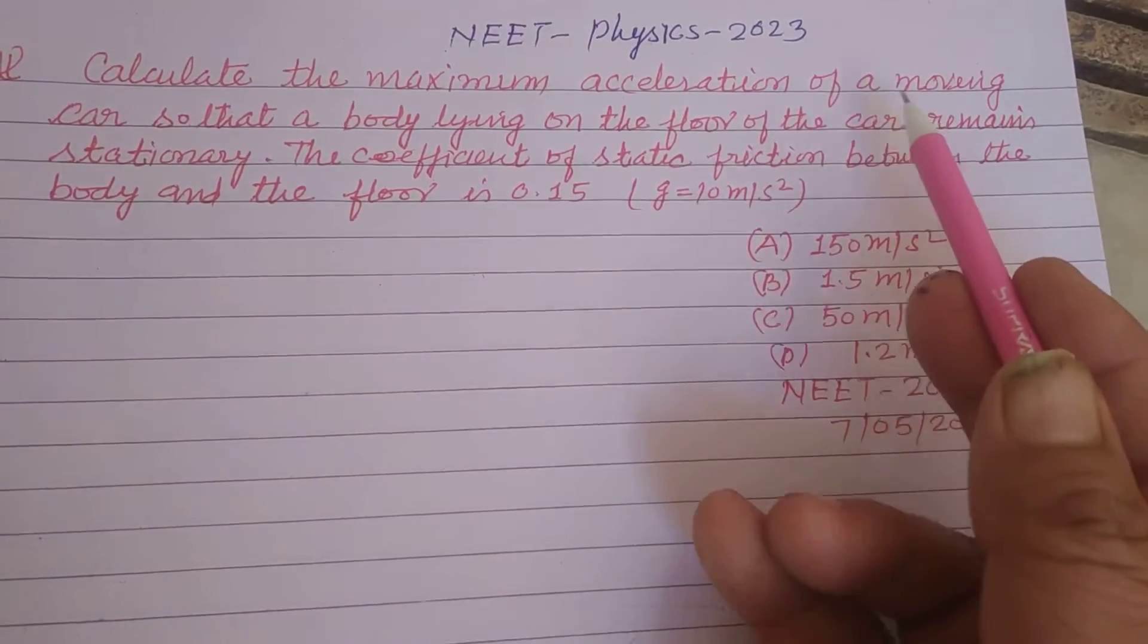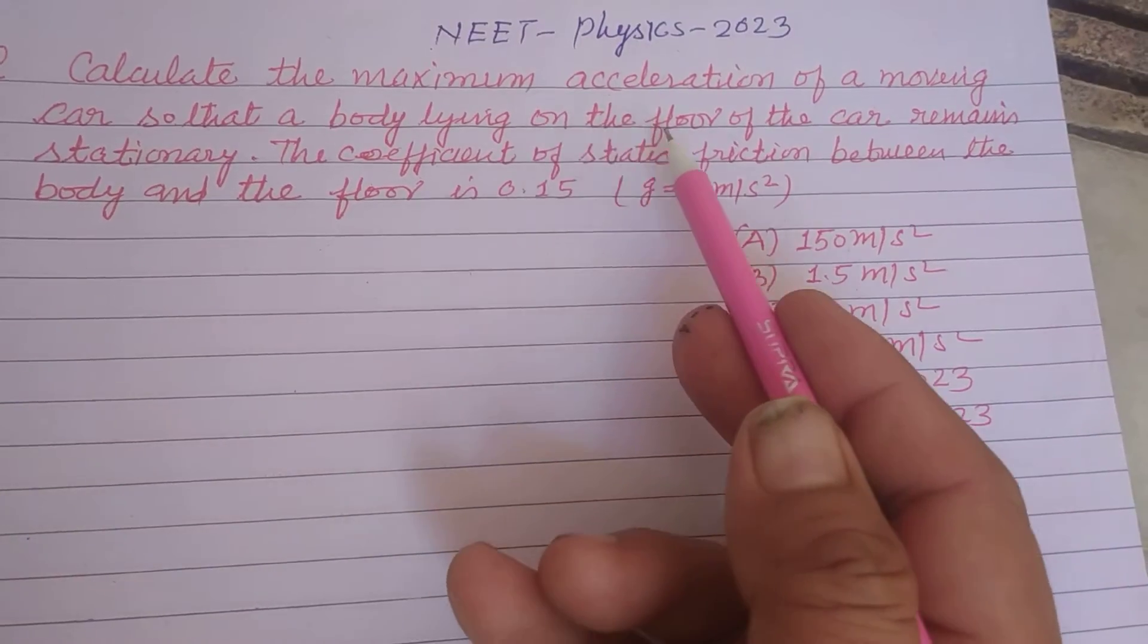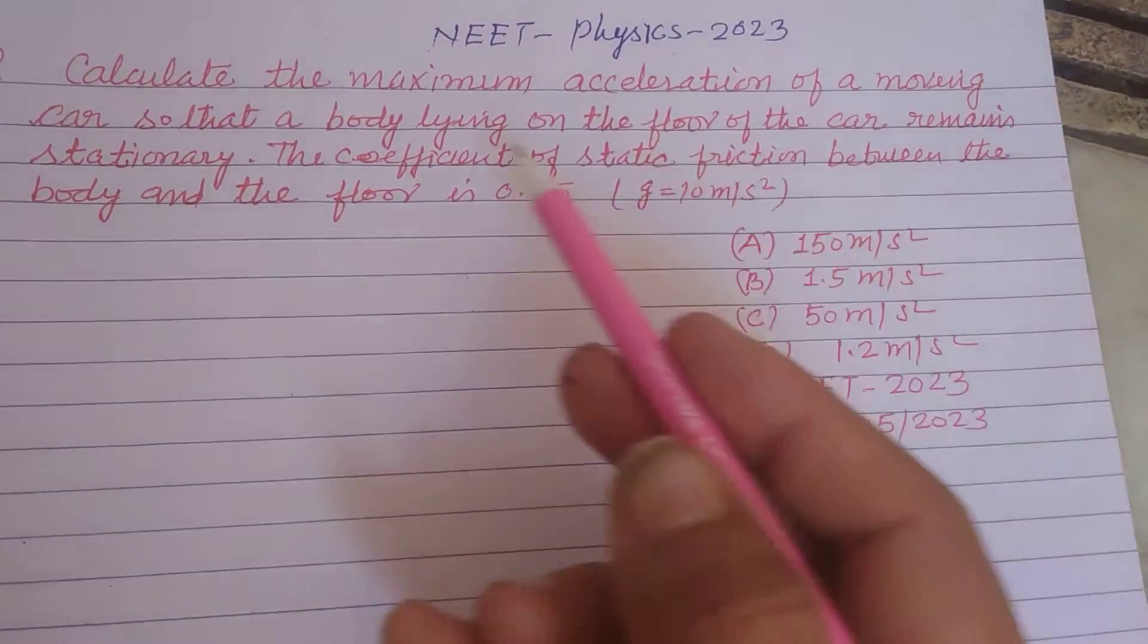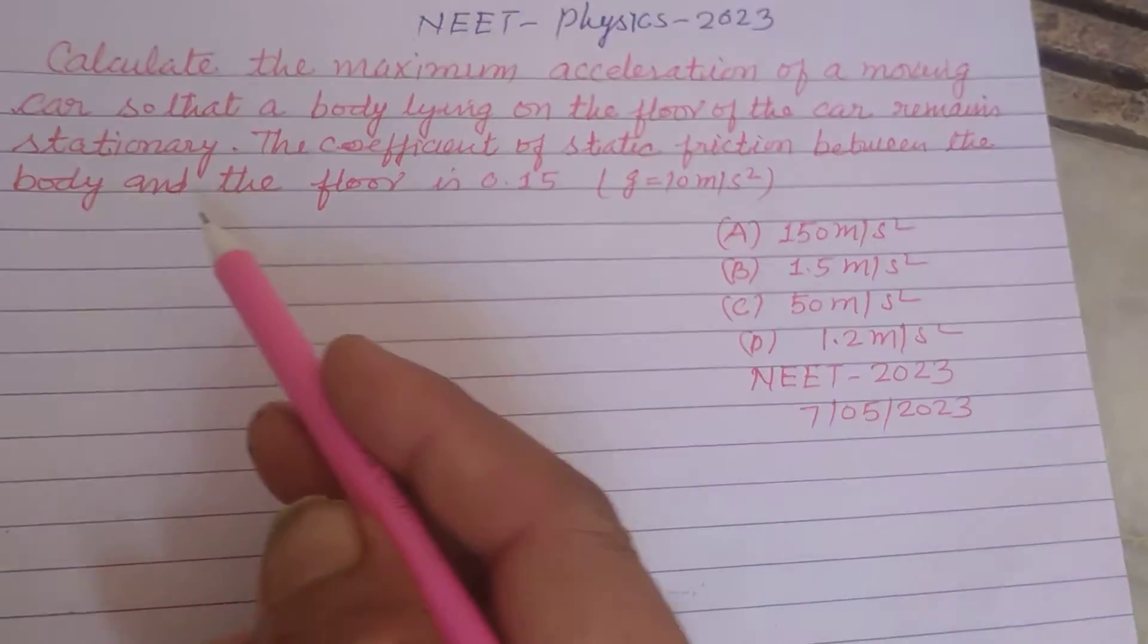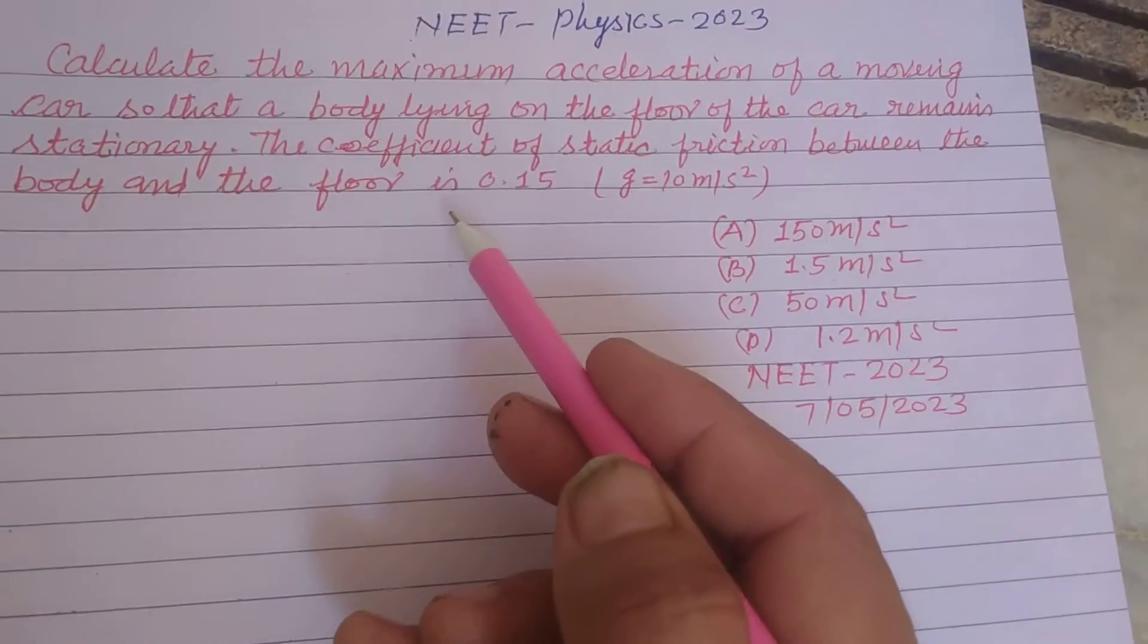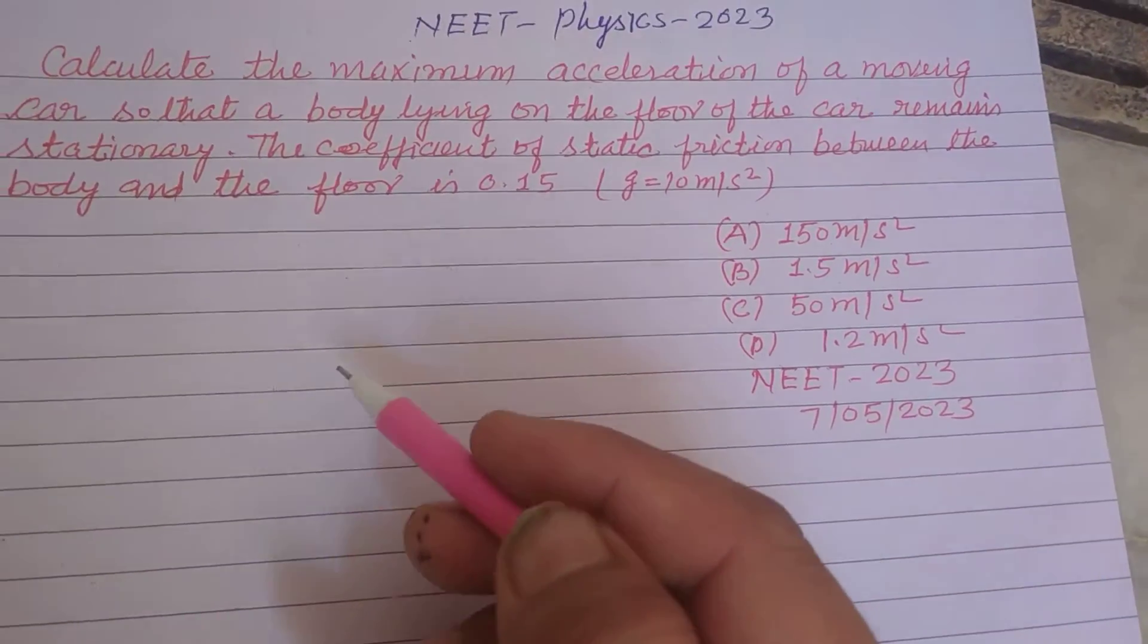Calculate the maximum acceleration of a moving car so that a body lying on the floor of the car remains stationary. The coefficient of static friction between the body and the floor is 0.15, g is given as 10 meter per second square.